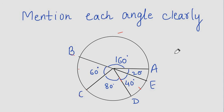Now mention each angle in the pie diagram clearly: 160 degrees, 60 degrees, 80 degrees, 40 degrees, and 20 degrees.